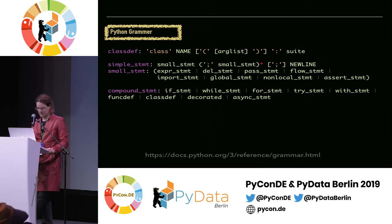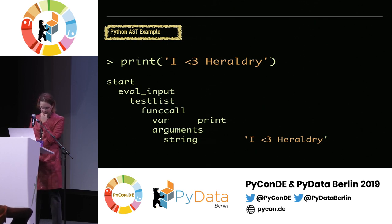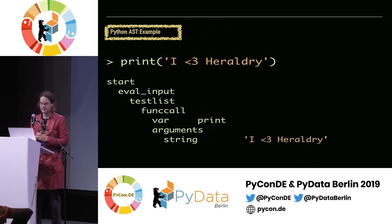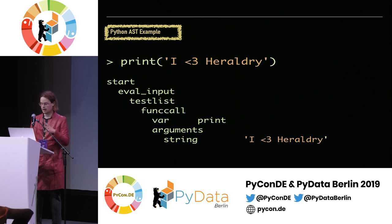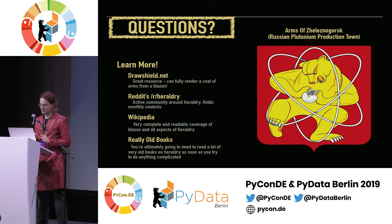Here's an abstract syntax tree for this print statement. We've got the start, the eval input, the function call, the variable — it's the print — and here's the first argument. If you can parse Python, you can start to understand where mistakes could happen, or if it's not parsing, how that's happening. Anyway, that's the point of this talk — it was to draw you in with Middle Ages stuff and then make you read the Python grammar.